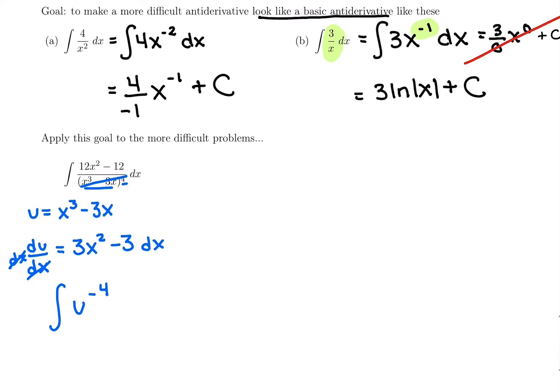And now for du, we want a 3 and x squared minus 3 dx, but I have a 12 and x squared minus 12 dx. So I have 12, so where I need 3s, is 12 too big or too small? 12 is 4 times my perfect du.